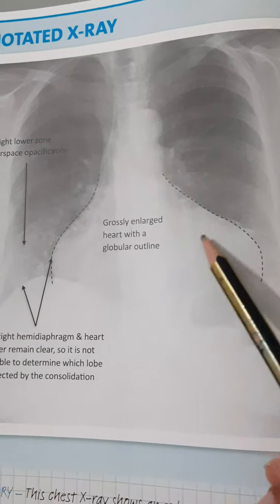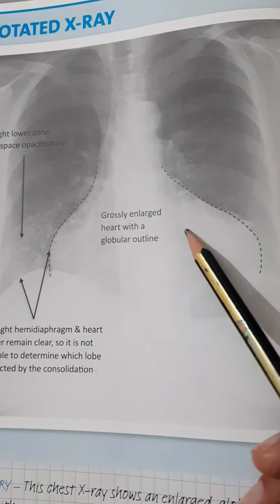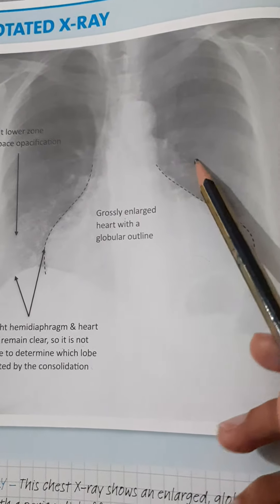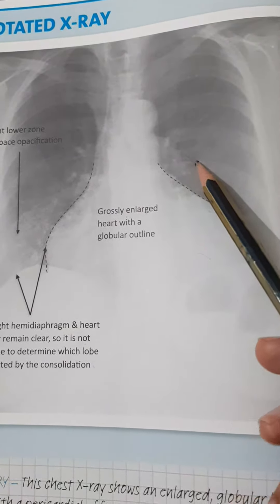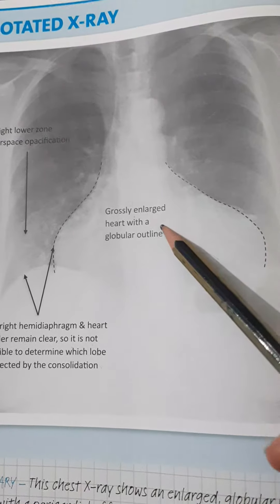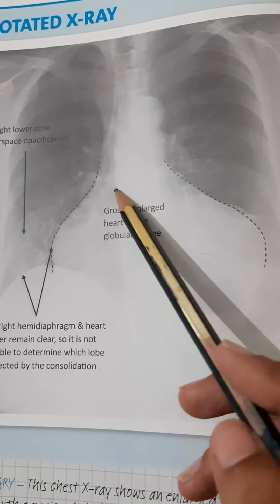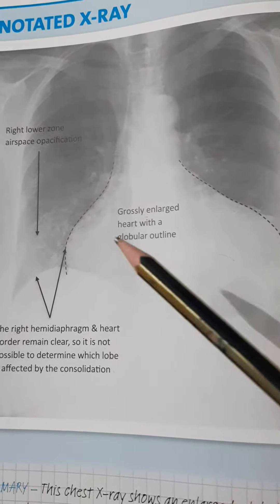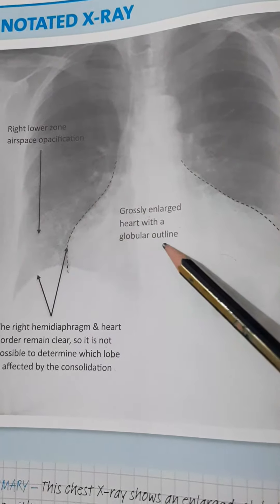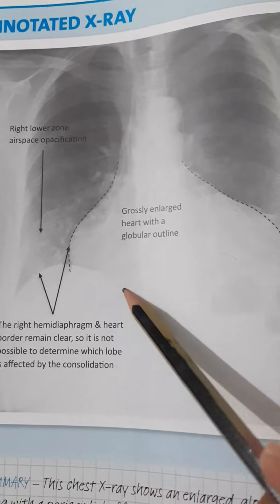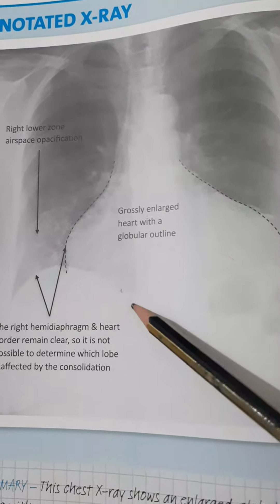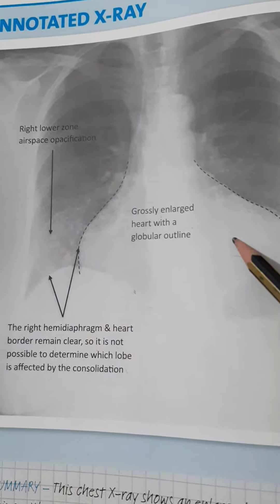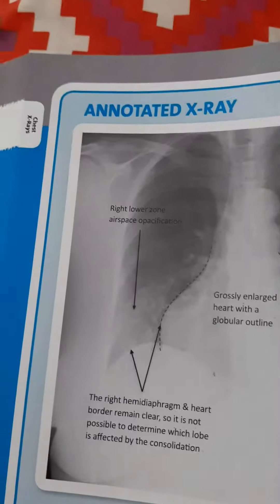This is the PA chest X-ray of an adult. The patient is slightly rotated to the right. It is otherwise a technically adequate X-ray with suitable penetration and good inspiratory effort. The apex of the left lung is cut off.